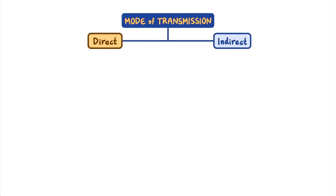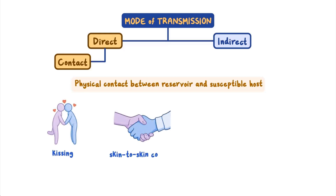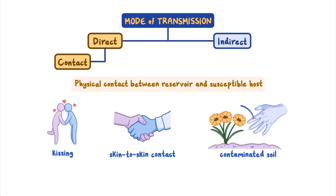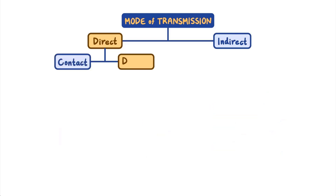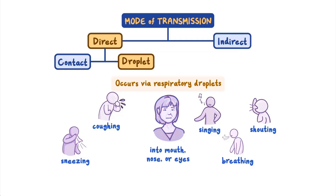Direct transmission is up close and immediate. Direct contact involves physical contact between the source or reservoir, such as an infected person or animal and a susceptible host. For some diseases, direct contact may involve kissing or other skin-to-skin contact. For agents in the soil, this could be contact with the contaminated soil, which can enter through a break in the skin. Direct droplet transmission occurs via respiratory droplets produced by coughing, sneezing, singing, shouting, or even breathing. These droplets travel only a short distance and directly enter the mouth, nose, or eyes of a new potential host.